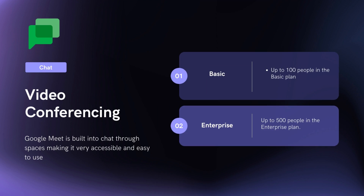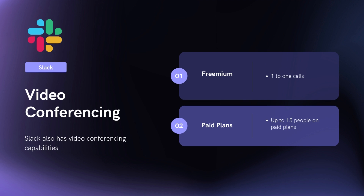What about video conferencing? Video conferencing is built into Google via Google Meet. On the basic plan you can have 100 people, and on the enterprise plan you can have up to 500 people, as well as streaming for up to 100,000. On Slack, you can have one-to-one video calls on the free plan, and in their paid plans you can have up to 15 participants — so a lot lower than Google on the video conferencing side.